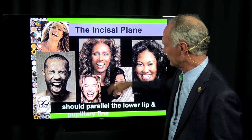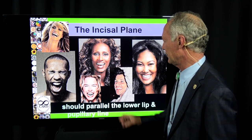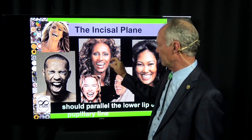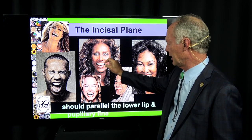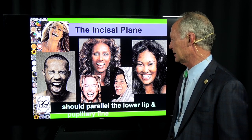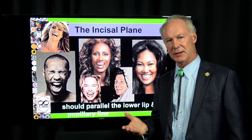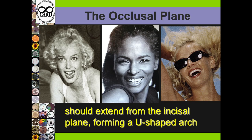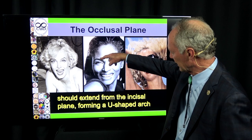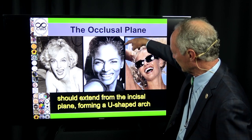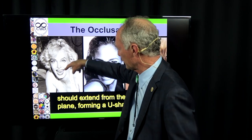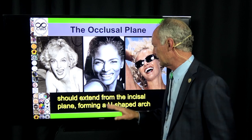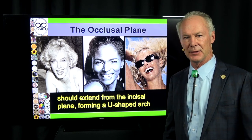If you have a short lateral incisor, you'd rather not have more than two to three millimeters of restorative material cantilevered off the incisal edge, or it's a pretty unstable restoration. The occlusal plane should extend from the incisal plane forming a U-shaped arch — from the second molar through the central incisors to the other second molar — with the central incisors being the longest and most dominant teeth.